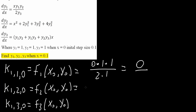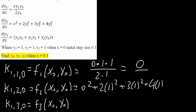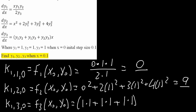Next we do the second equation. x is 0, so we have 0 squared plus 2 times 1 squared plus 3 times 1 squared plus 4 times 1 squared — using this formula right here, since y1, y2, and y3 are all 1 when x equals 0. This equals 9. Finally the third equation: y1 times y2 is 1 times 1, plus y1 times y3 is 1 times 1, plus y2 times y3 is 1 times 1, times x which is 0, giving 0.